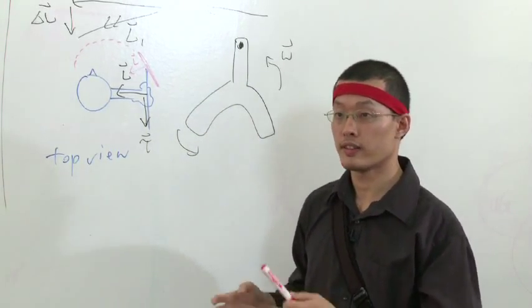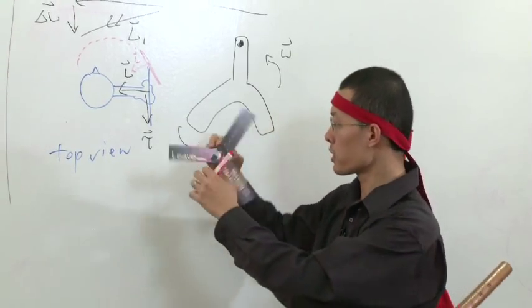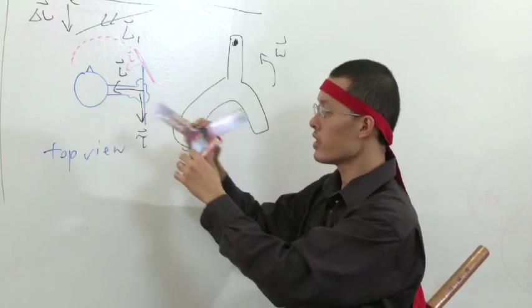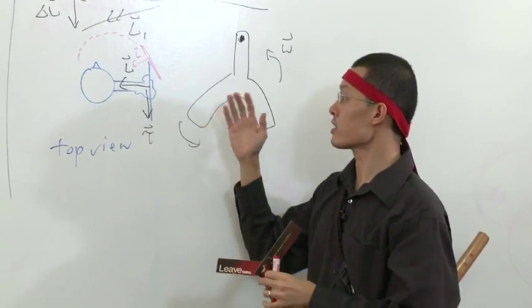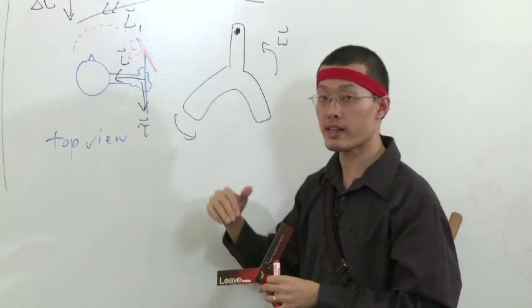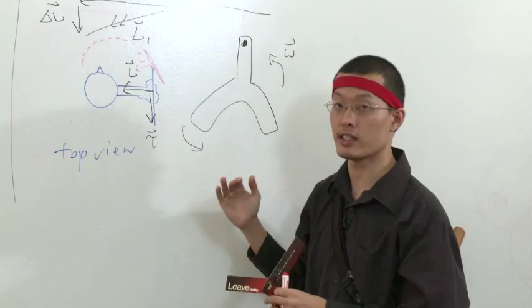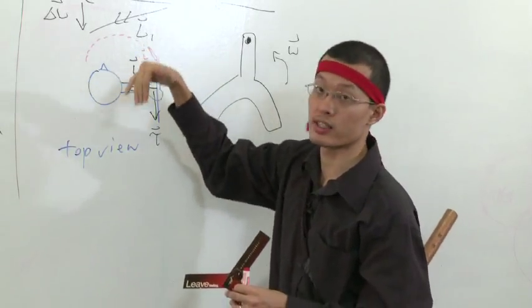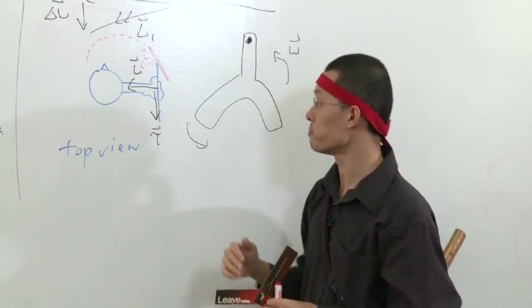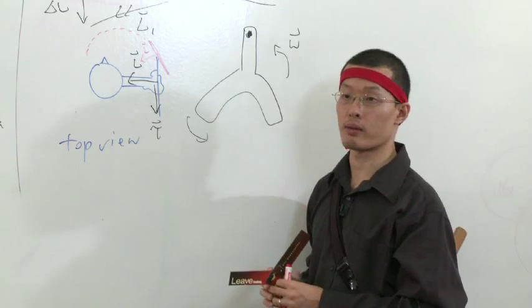So we've just shown that the spinning motion of the boomerang, right, this particular spin plus motion, this effect actually causes a torque, which then causes the angular momentum, the L, the L vector, to do what we call precession, meaning to go round in a circle, to spin round. And this really is the explanation for why the boomerang comes back to you.